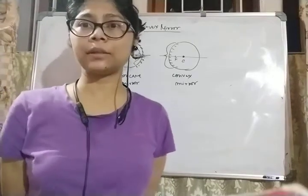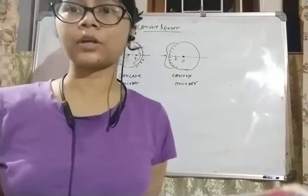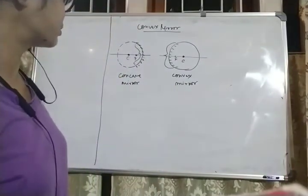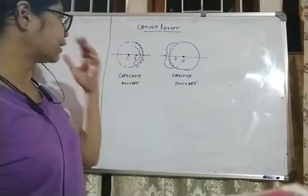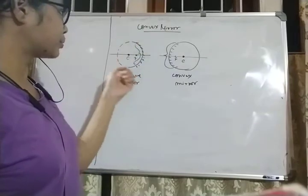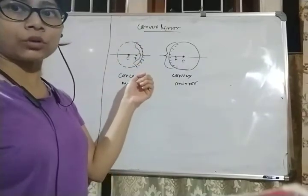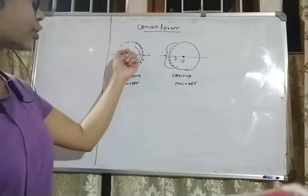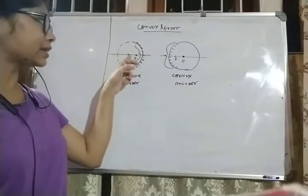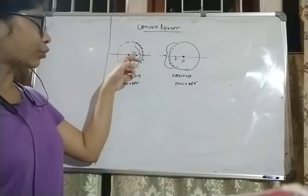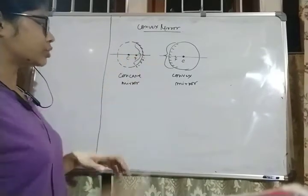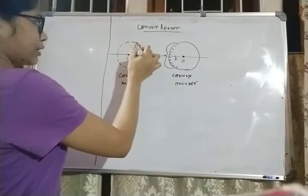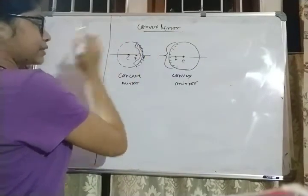I already mentioned the image formation by the concave mirror. I am going to show you the concave mirror, which is already the spherical mirror part. So the spherical mirror part has the center of curvature, and the focus is the center. This is the pole. The reflecting surface is on this side.